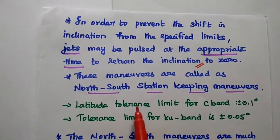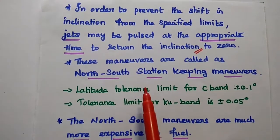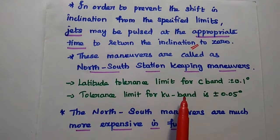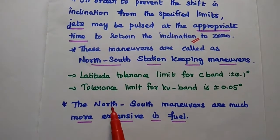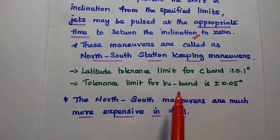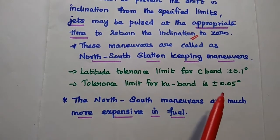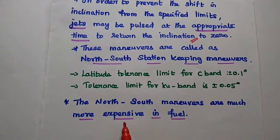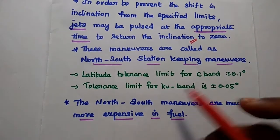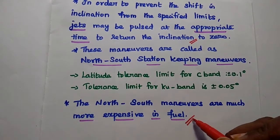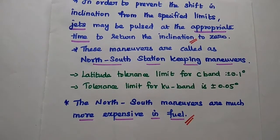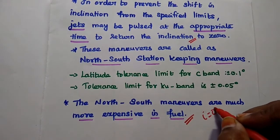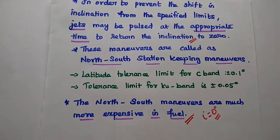These maneuvers are called north-south station keeping maneuvers. The tolerance limit for C-band is plus or minus 0.1 degree, and for Ku-band it is plus or minus 0.05 degree. The north-south maneuvers are much more expensive in fuel to keep the orbit aligned with the equatorial plane. The inclination angle must always be maintained at 0 degrees.